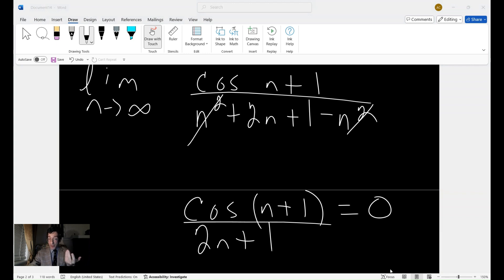So we say that it's bounded in that sense. So we have the cosine of n plus 1 divided by the 2n plus 1 as the limit approaches infinity. And therefore, we have shown that the original problem exists, and it is equal to 0.